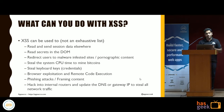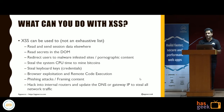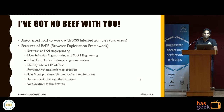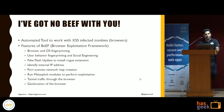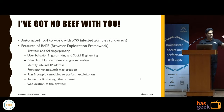XSS can allow an attacker to read and send session data elsewhere, read secrets in the DOM, redirect users to malware-infested sites, steal system CPU to mine bitcoins, steal keyboard keystrokes, perform browser exploitation for RCE, phishing attacks, frame content from other sites, hack into internal routers, and update DNS or gateway settings. There are automated tools like BEEF — the Browser Exploitation Framework — that let you perform post-exploitation with XSS. It manages browsers infected with an XSS payload, which it calls 'zombies,' and allows you to fingerprint the OS and browser, run port scans, provide fake flash updates, and tunnel traffic through the browser.